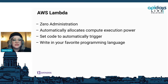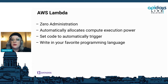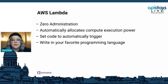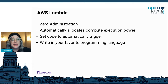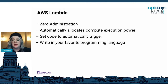We're specifically talking about AWS Lambda for our serverless functions today. You can run code for virtually any type of application or back-end service, all with zero administration. Just upload your code as a zip file or a container image and Lambda automatically allocates compute execution power and runs your code based on the incoming request or event for any scale of traffic.